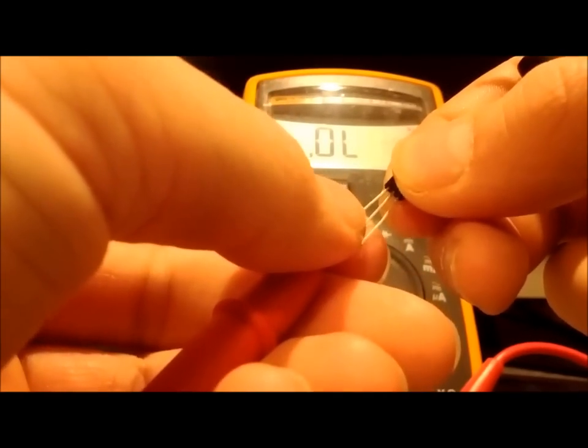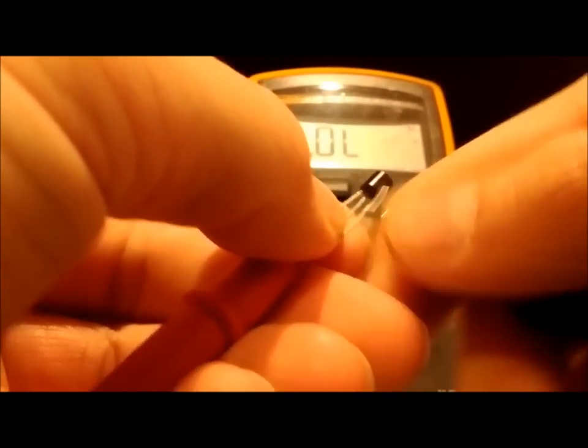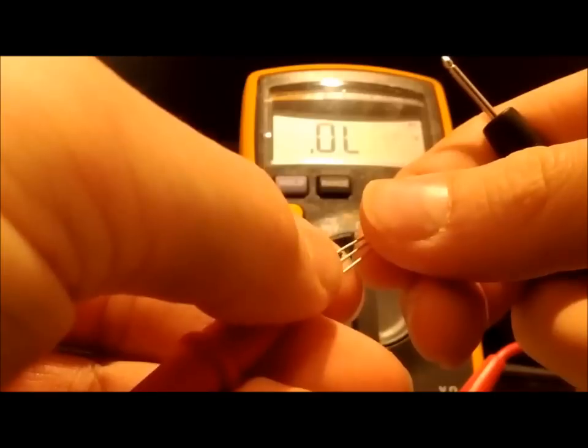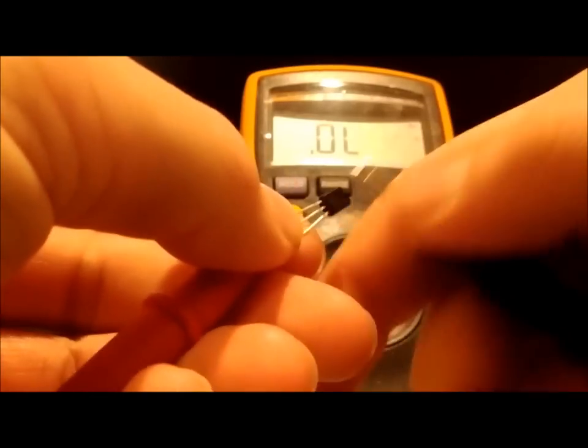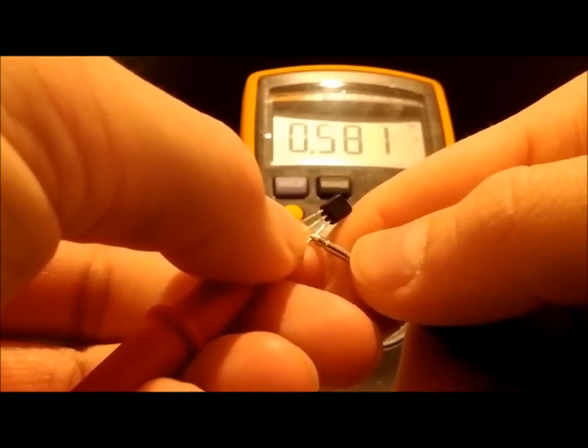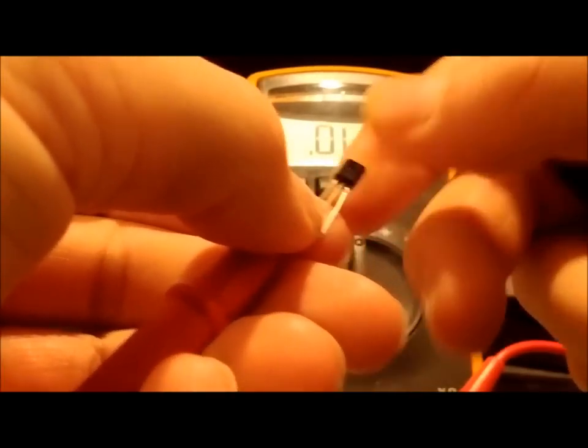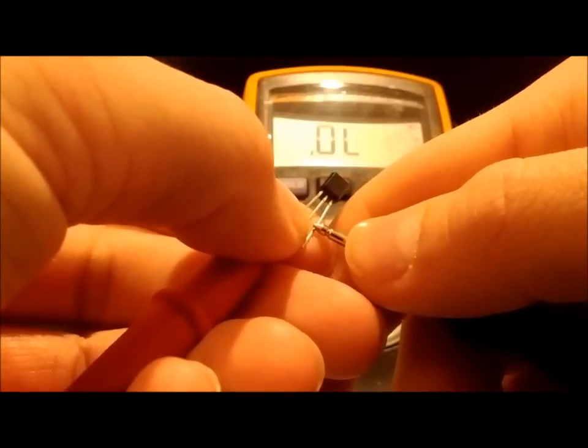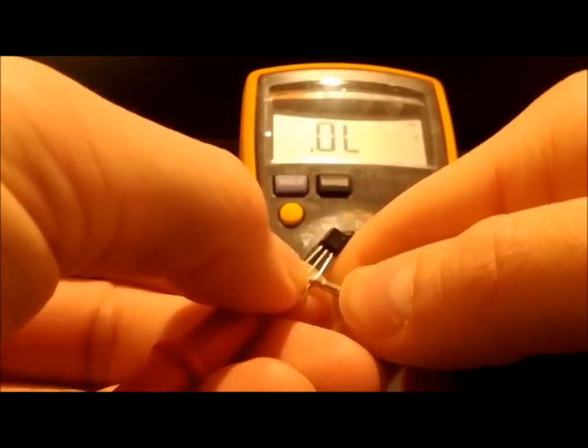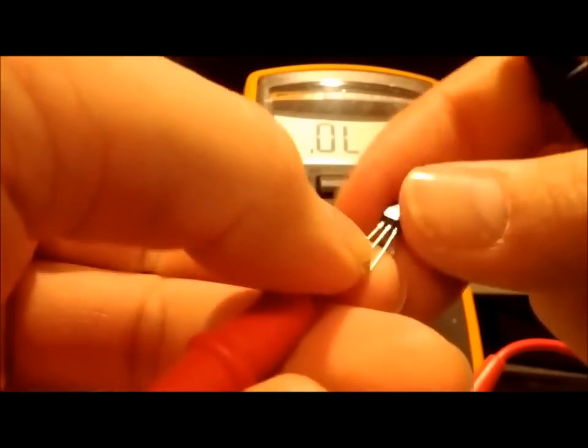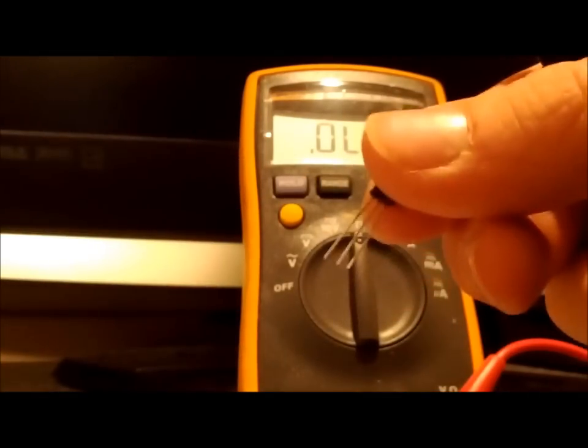If I go either from the emitter to the collector or from the collector to the emitter, you should have nothing at all. And that's because that circuit is closed until you bias the base to the emitter.